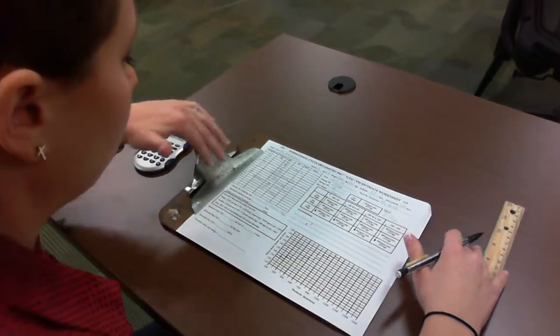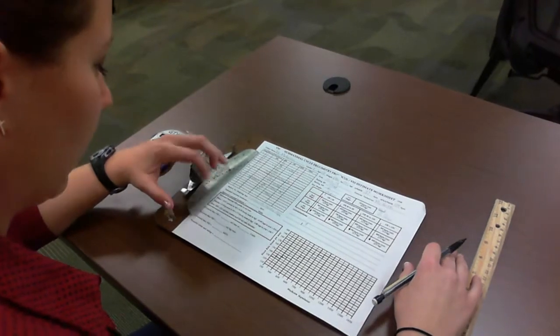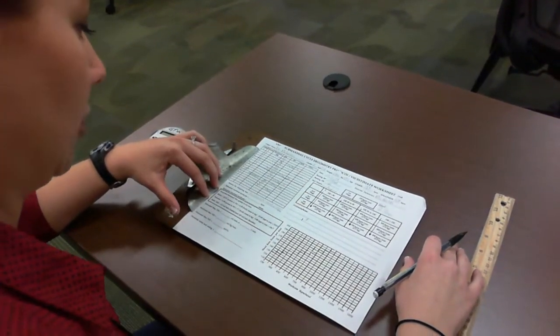So now we're going to take all of Dr. McIntyre's information, graph it, and get her estimated work rate and estimated VO2.